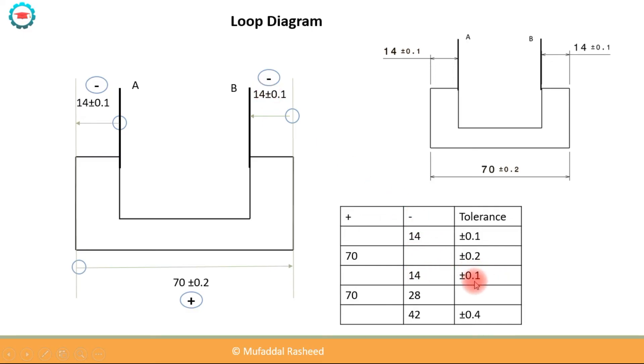And again, 14 which is again in minus, so under minus column, 14 plus or minus 0.1. Then we find out this sum. Sum of all the plus values: there is only one plus value which is 70. There are two minus values, 14 and 14, so we get this sum over here, 28. Now to get the nominal dimension of the gap AB, we will have to subtract 28 from 70.